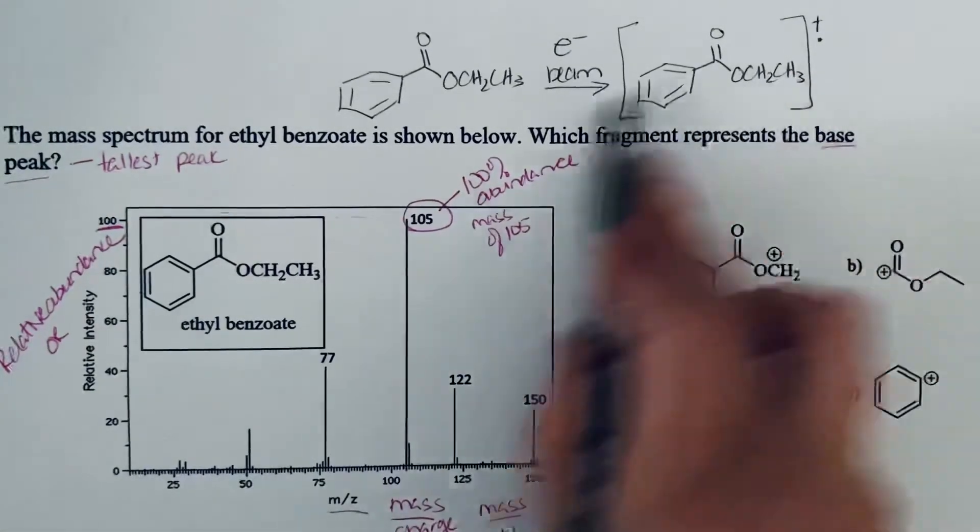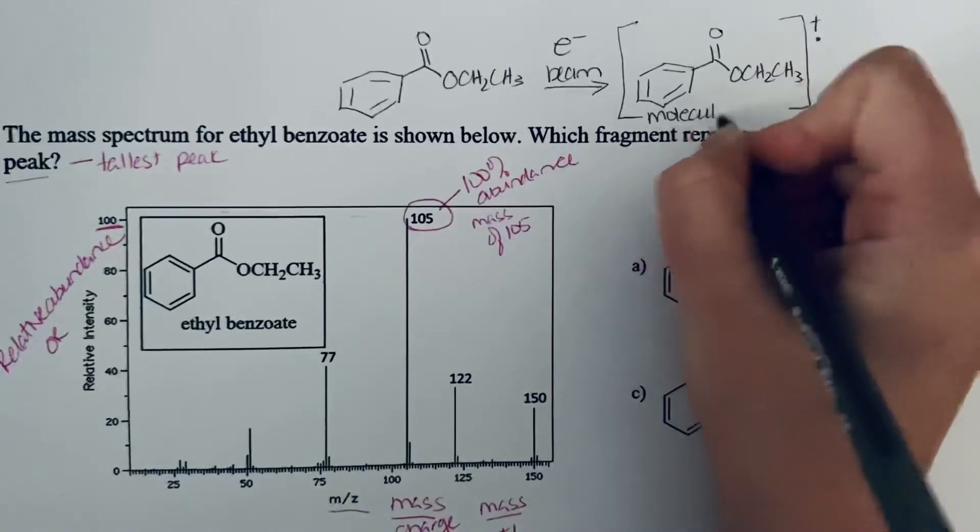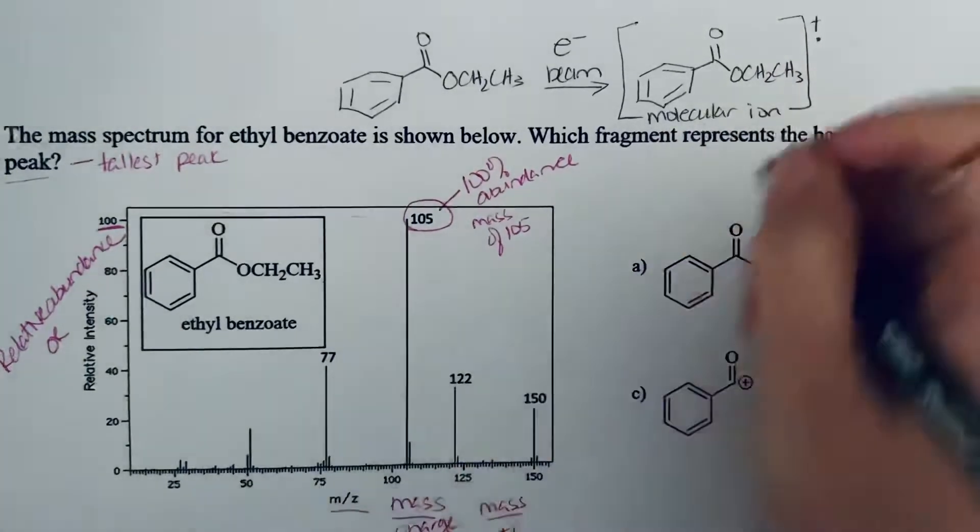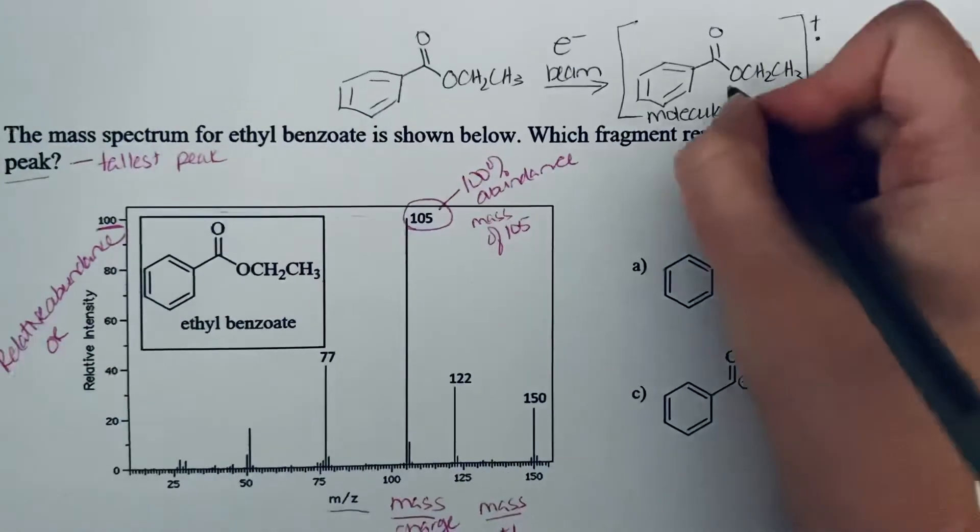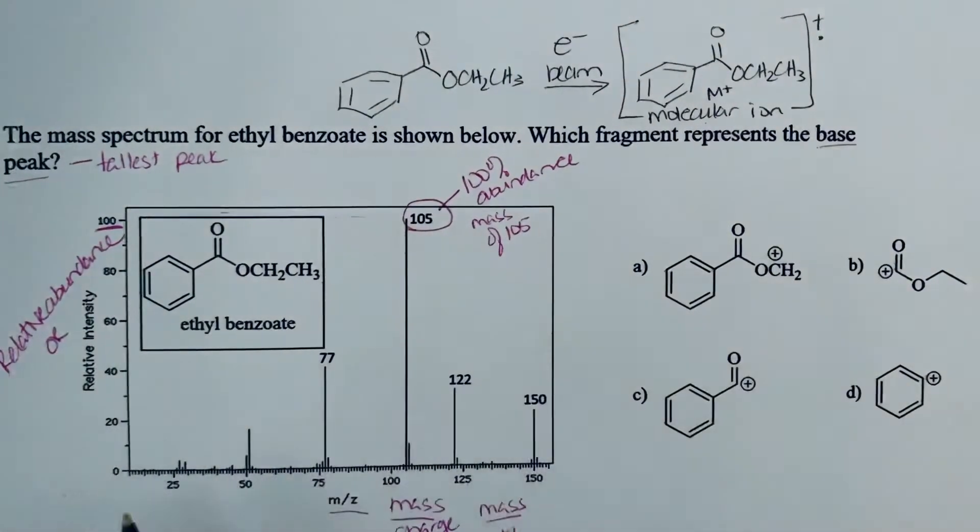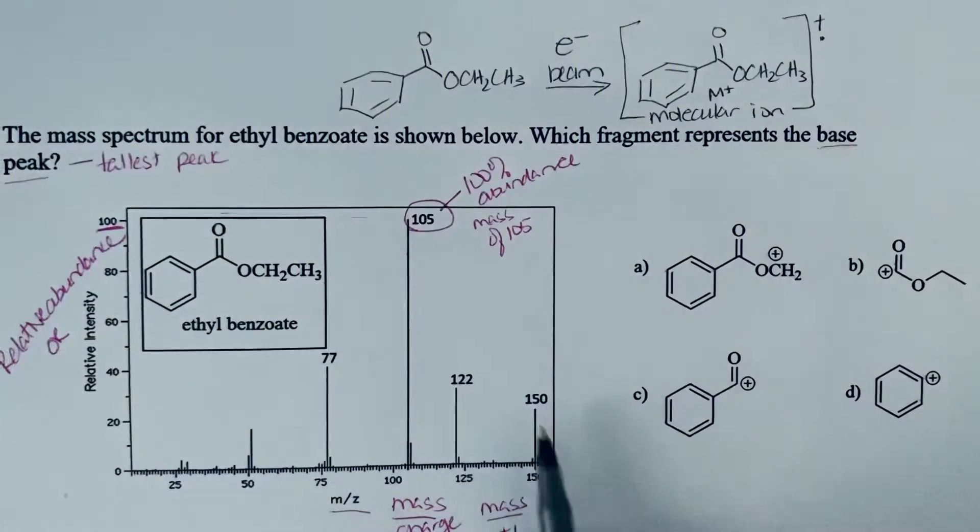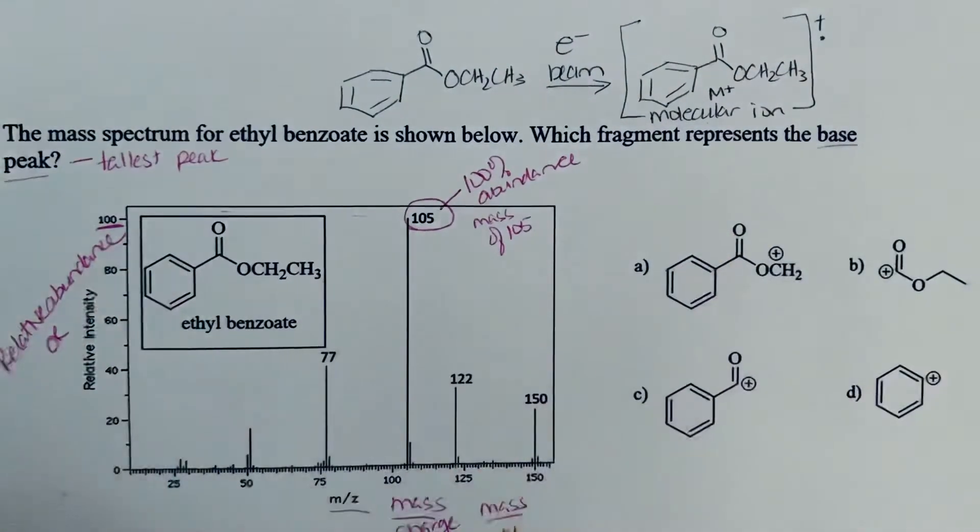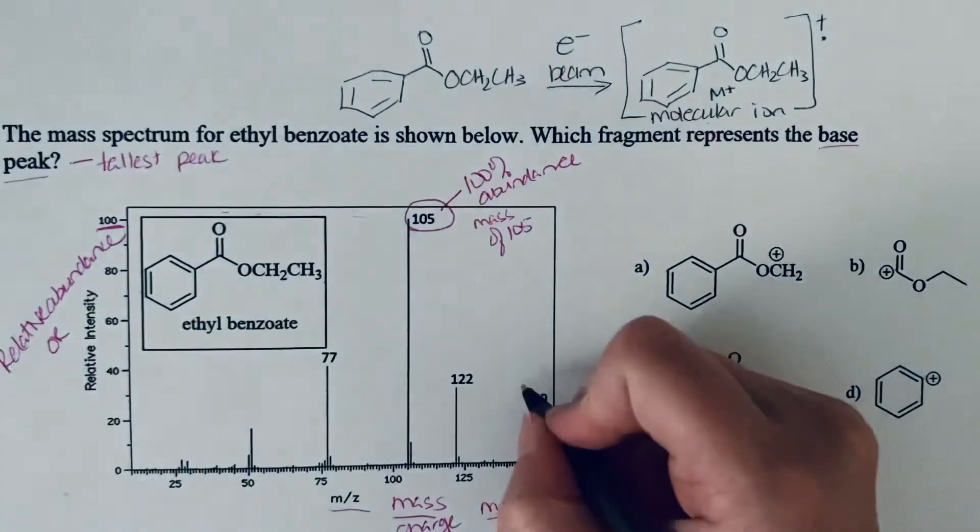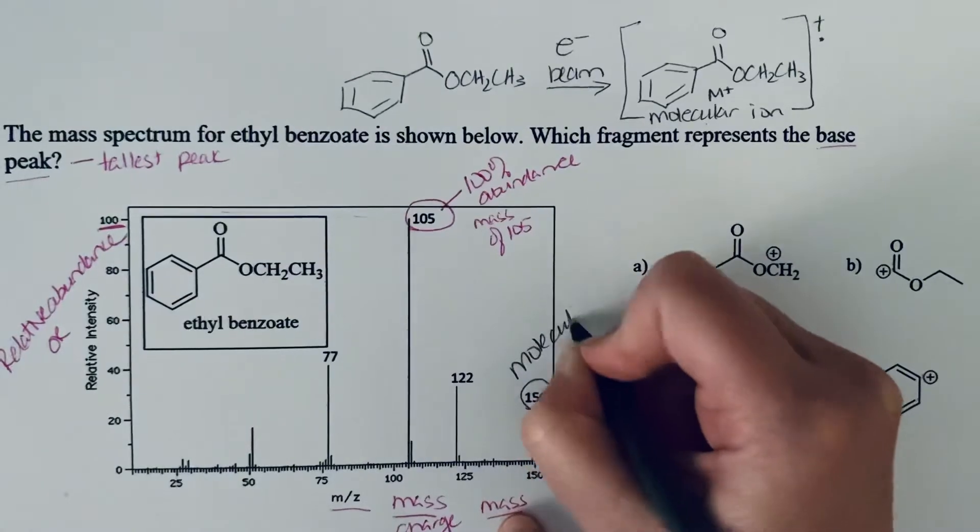What you initially form is this radical cation, and notice it's the whole molecule. So this is what's known as the molecular ion, and we often abbreviate this as M+. And that's typically going to be the heaviest peak in your spectrum because if you're starting with the whole molecule and then it's going to fragment, the heaviest one is going to be your molecular ion.